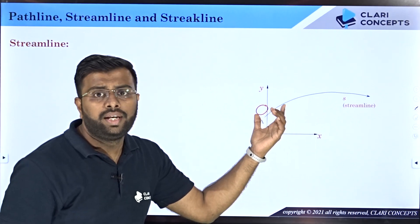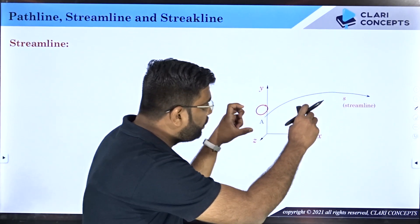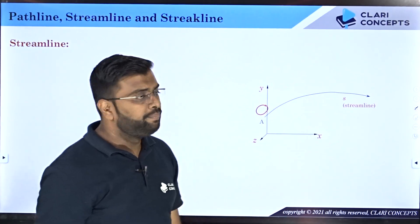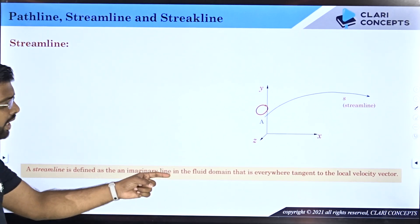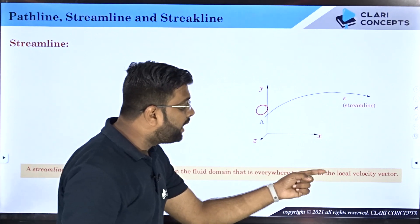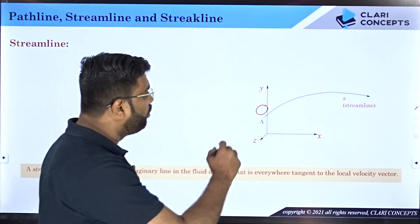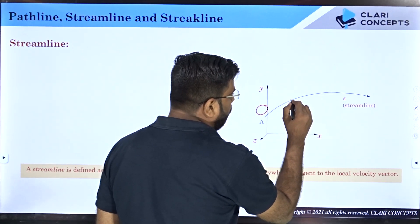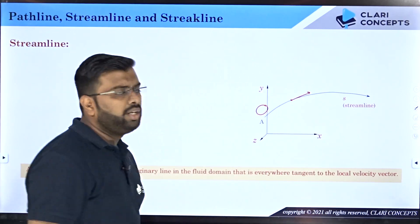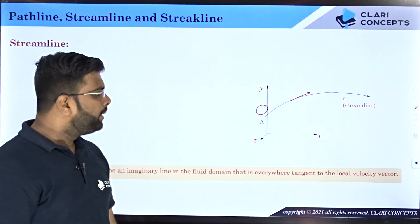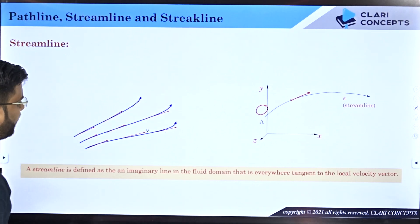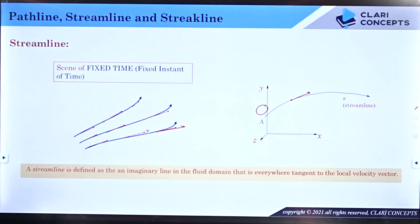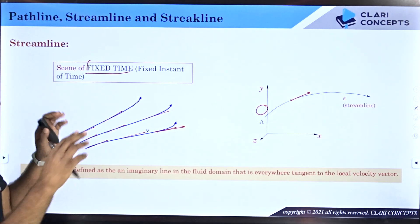This is not a scene of varying time — this is a scene of instantaneous time. Why? Because you have clicked a photograph; the particles you are looking at are different particles at different locations at a given instant of time. Once a streamline is available, if you ask what is the velocity of a fluid particle at any point, you can straight away say it is tangential to the streamline — velocity will always be tangential to the streamline. So streamline is a scene of fixed time because it is a fixed instant of time.